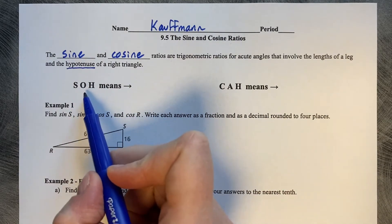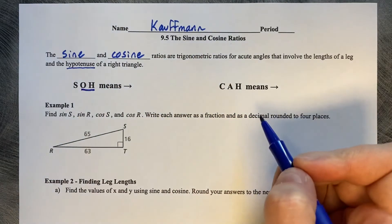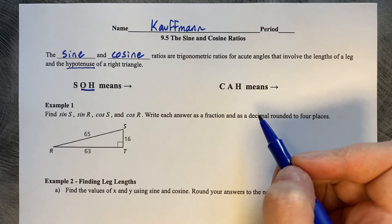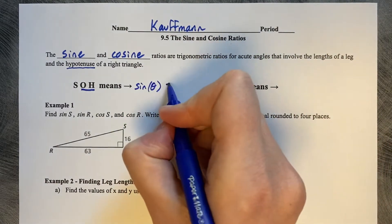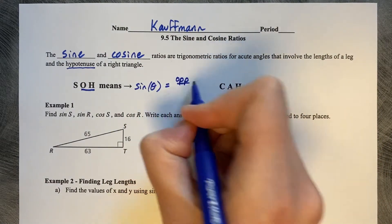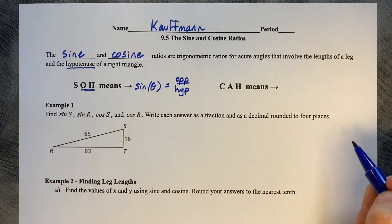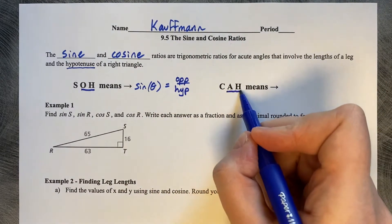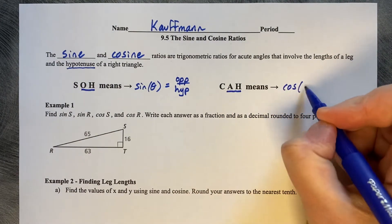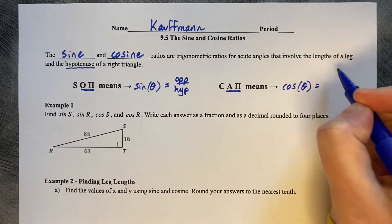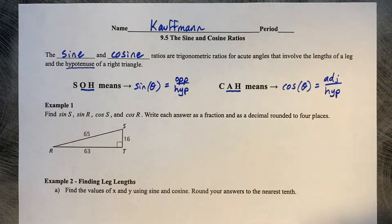From SOH CAH TOA, remember you're looking at the second two letters to identify the two side lengths you're working with. That means the sine of theta is equal to the opposite side length divided by the hypotenuse. And from CAH, the C stands for cosine — cosine of theta is equal to the adjacent divided by the hypotenuse.